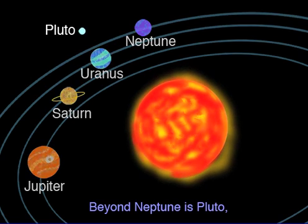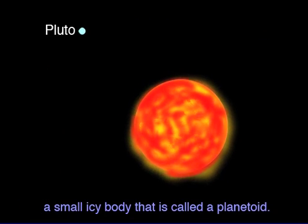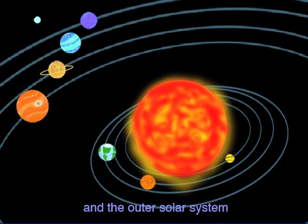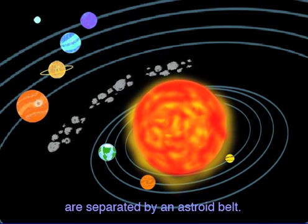Beyond Neptune is Pluto, a small icy body that is called a planetoid. Both the inner solar system and the outer solar system are separated by an asteroid belt.